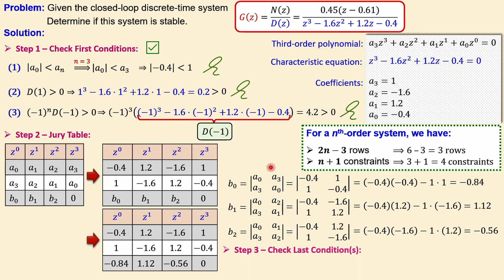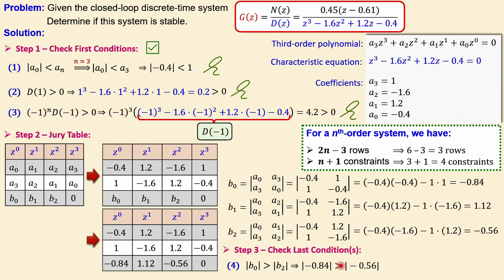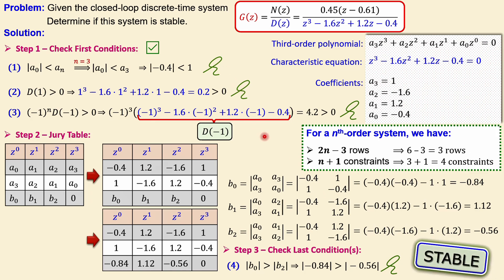Step three is to check the final condition. For our third-order system, the fourth constraint requires that |b0| > |b2|. We have |b0| = |−0.84| = 0.84 and |b2| = |−0.56| = 0.56. Since 0.84 > 0.56, this condition is also met. All four conditions are satisfied, so the conclusion is that the system is stable.